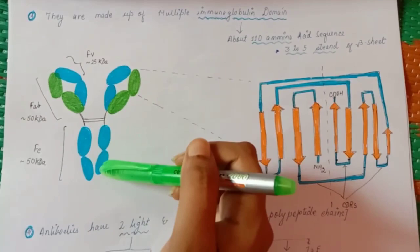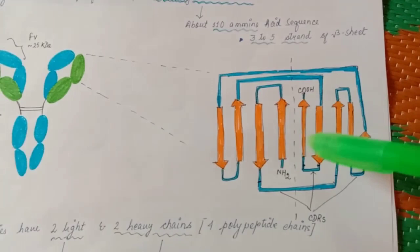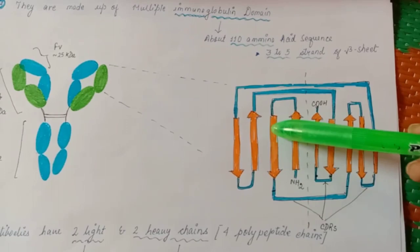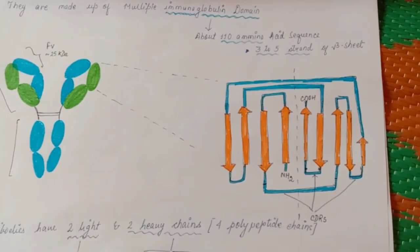This image is from Kuby book of immunology, as I have told in the first lecture that I will prefer that book. This is the variable region. You can see this antiparallel structure of beta strands, beta sheets of amino acid.